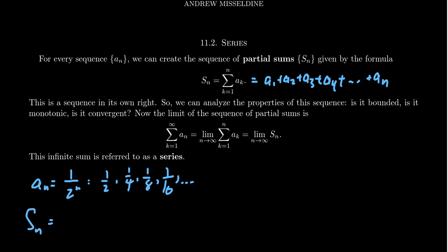And so the sequence of partial sums, we would take the first term, which is just 1 half. That's all there is. The second term, we would take 1 half plus 1 fourth, which is going to give us 3 fourths. The third term would be the sum of the previous terms, 1 half plus a fourth plus an eighth.